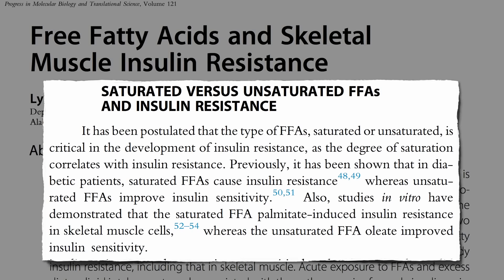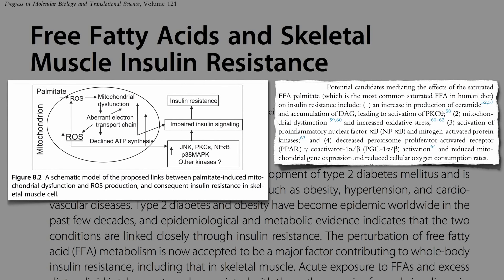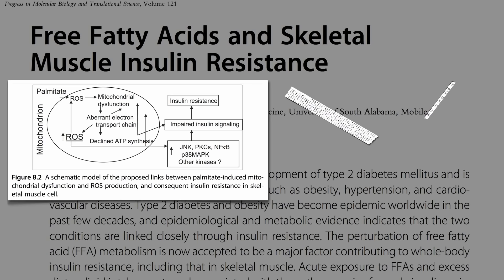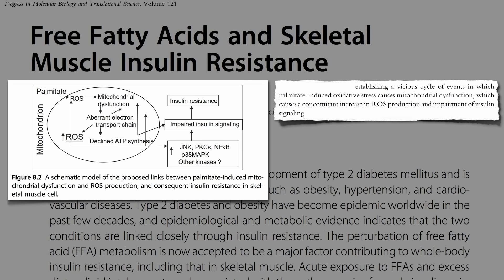What makes saturated fat bad? Saturated fat causes more of those toxic breakdown products and mitochondrial dysfunction, increasing oxidative stress, free radicals, and inflammation — causing a vicious cycle in which saturated fat-induced free radicals cause dysfunction in the little power plants within our muscle cells, which in turn causes an increase in free radical production and impairment of insulin signaling.